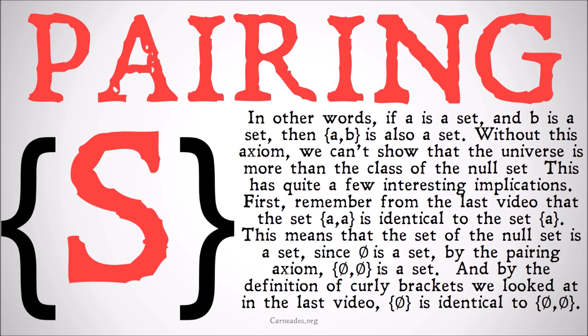First, remember from the last video that the set of A and A is identical to the set A, based on our definition of curly brackets and extensionality. This means that the set of the null set is a set, since the null set is a set. By the pairing axiom, the null set and the null set is a set. And by looking at the definition of curly brackets, we can see that the set of the null set is identical to the set of the null set and the null set.